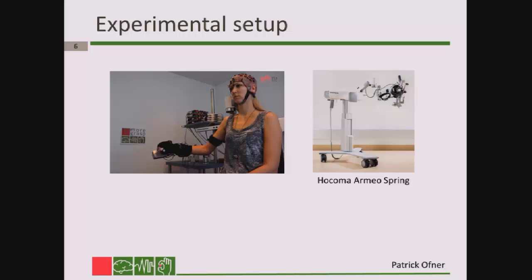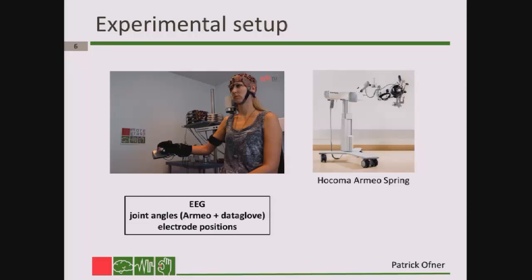To be clear, this was an initial study and we started with executed movements in healthy persons. The subjects sat in a chair, and their right hand was supported by a Tymo AMEO spring, which was a rehabilitation device. They then executed several movements. We recorded the EEG and the joint angles of the hand, arm, and fingers with the AMEO and a data glove. This was done to detect the movement onset. We also recorded the electrode positions for source imaging.